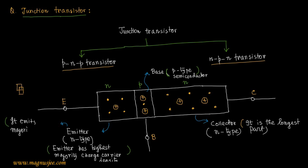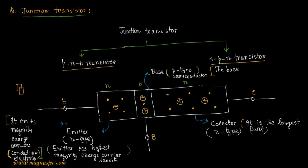The emitter emits majority charge carriers. Since the emitter is N-type, it emits conduction electrons. If the emitter is forward biased, the majority charge carriers — conduction electrons — produced by the emitter will migrate into the base.